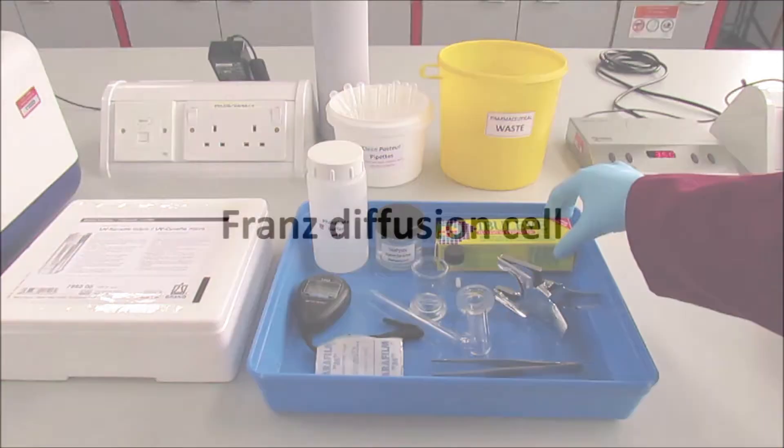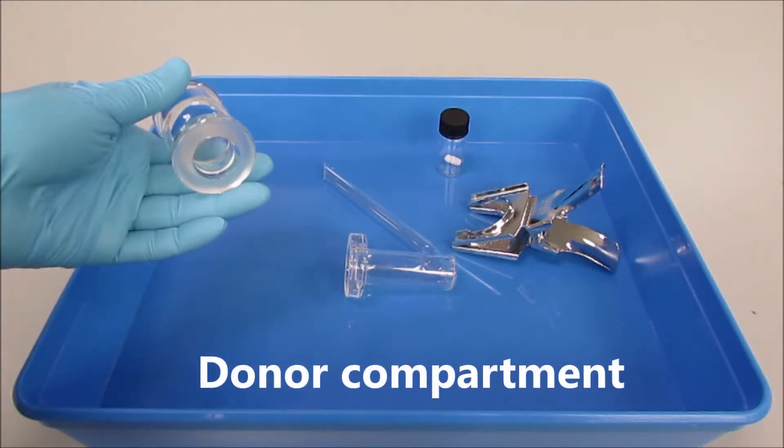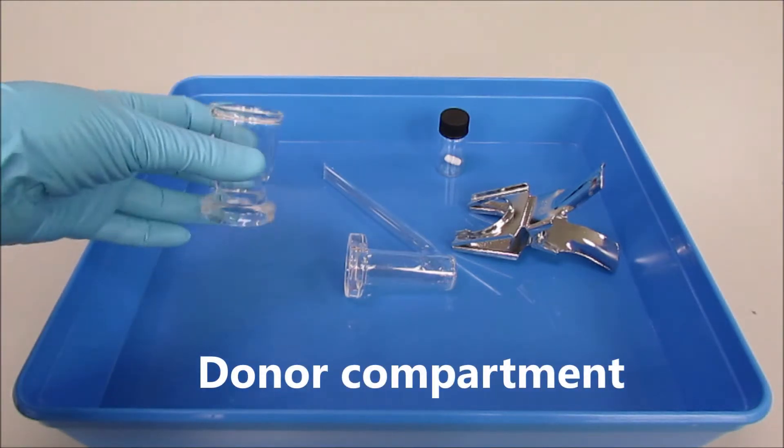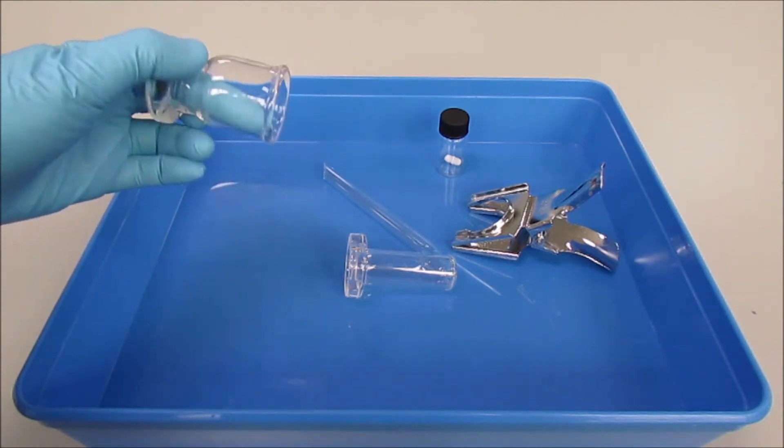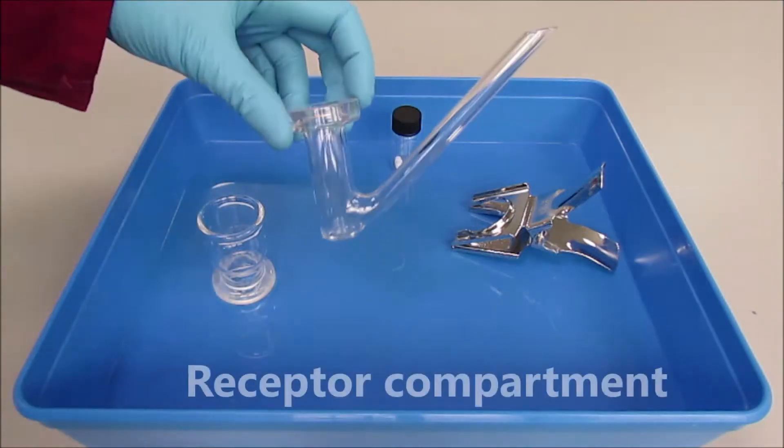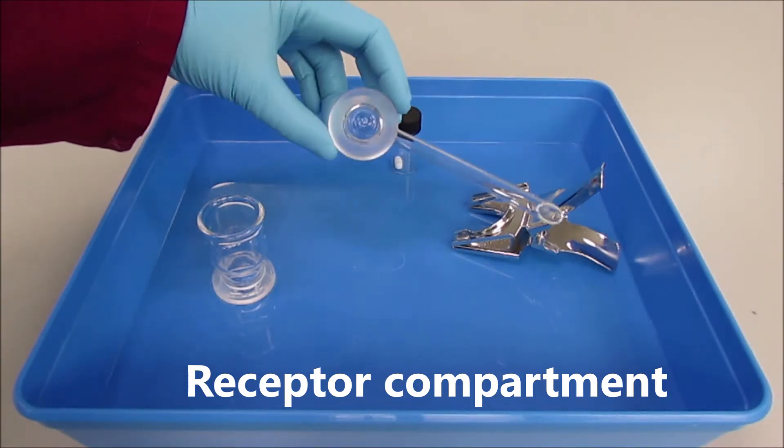We will be looking at ibuprofen transdermal creams and this is how to set up the FRANS cell. The FRANS cell consists of a donor compartment and a receptor compartment, both made of glass.